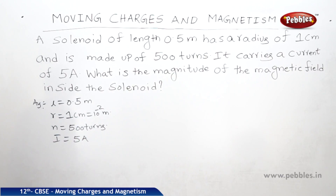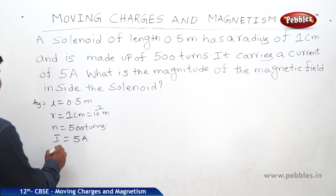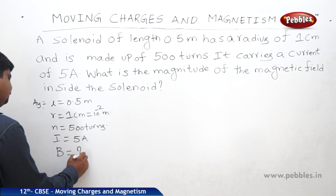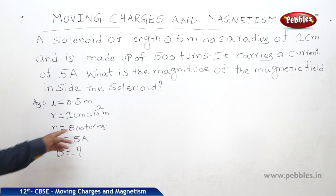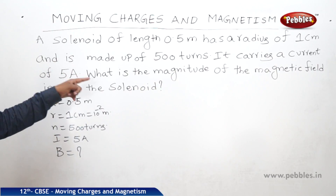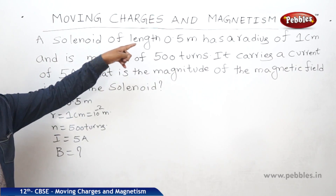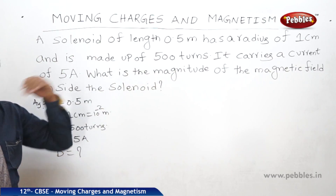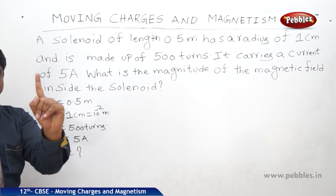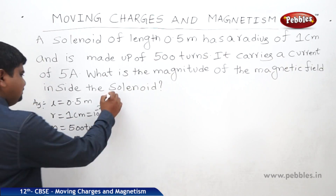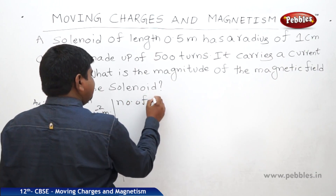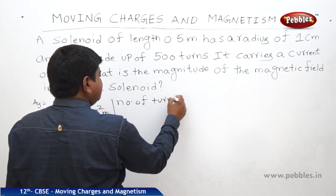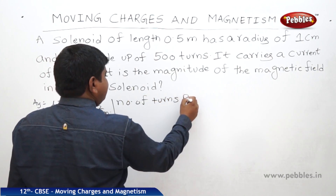What is the magnitude of the magnetic field inside the solenoid? We know that B is equal to μ₀NI. We should not substitute N equal to 500 directly, because these are the number of turns for a given length. We need to find how many turns there are per unit length — the number of turns per unit length.